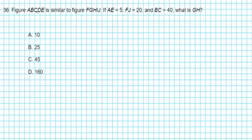It says figure ABCDE is similar to figure FGIJ. If AE is 5, FJ is 20, BC is 40, what is GH?